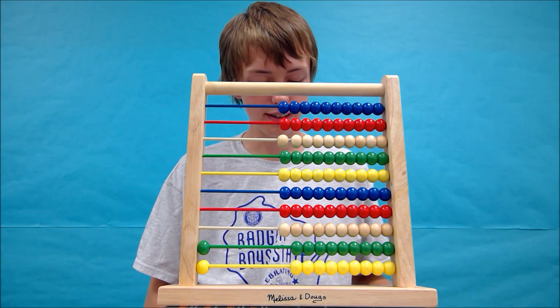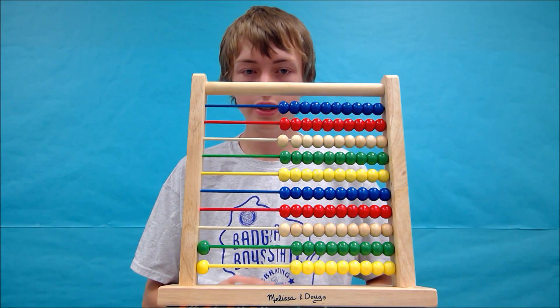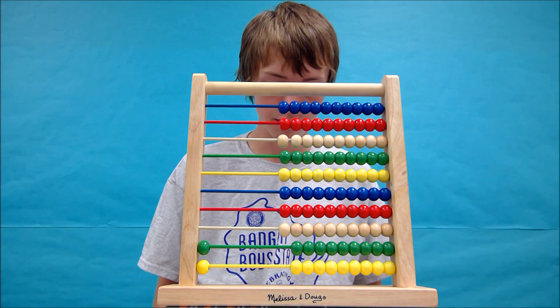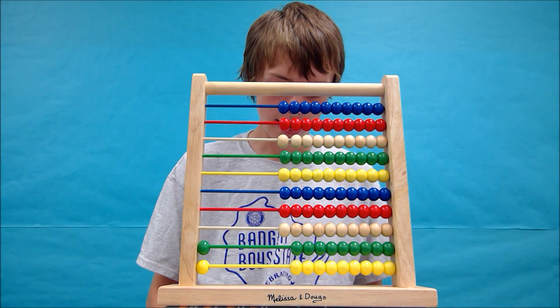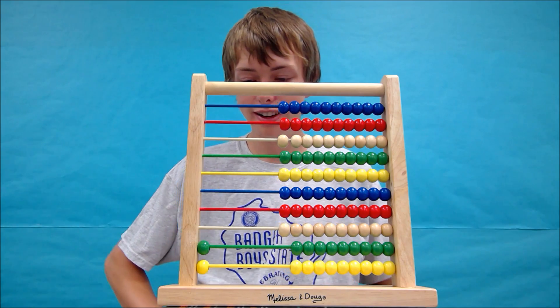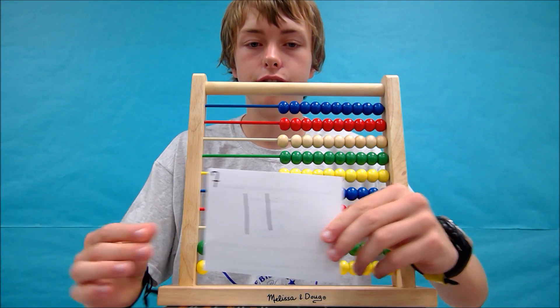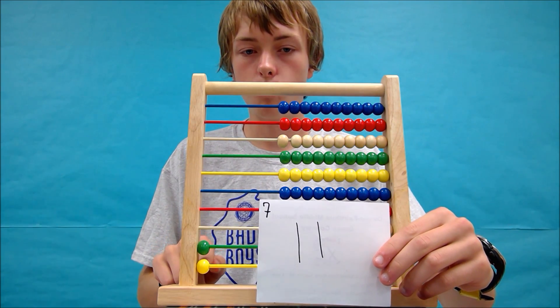So this one again isn't that difficult. So we wouldn't need to write it down, but I will just for the sake of showing you guys. And we have the number 11 because there's one green bead and one yellow bead.